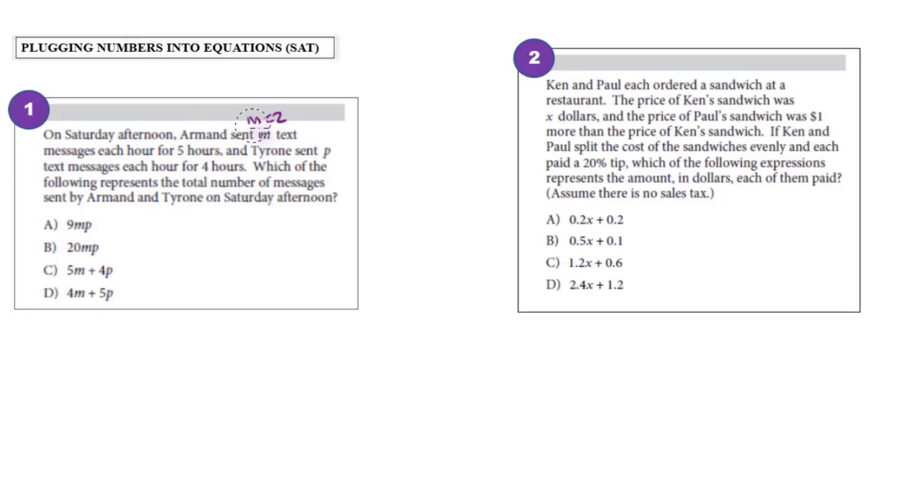And it also says Tyrone sent P text messages each hour for four hours. So I could let P be equal to three. I could just choose any number. Now if Armand sent two text messages each hour for five hours, that means in total Armand would have sent 10 messages, two times five. Likewise, if Tyrone sent three text messages for four hours, then that would be three times four, which is 12.